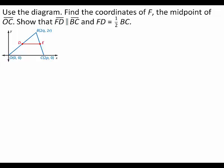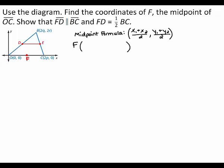To find the coordinates of F, first plot F on the graph as the midpoint of segment OC. Because F is a midpoint, you can find the coordinates of F using the midpoint formula. Let x1 equal 0, y1 equal 0, x2 equal 2p, and y2 equal 0. You can substitute these values into the midpoint formula.